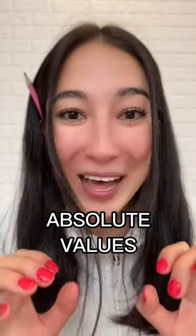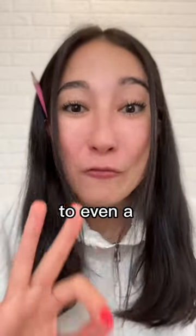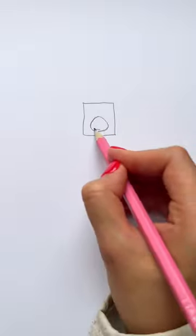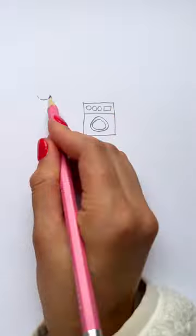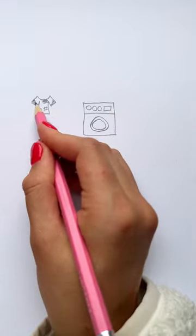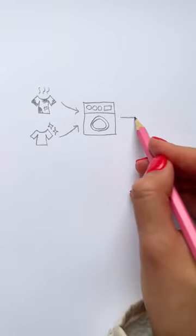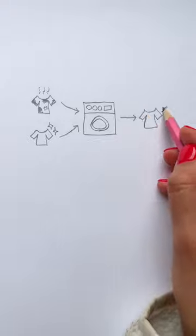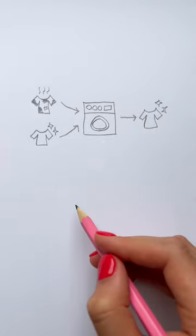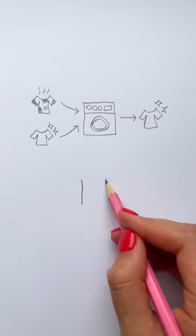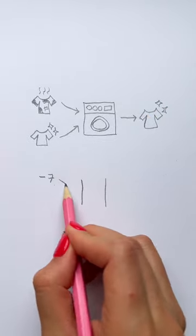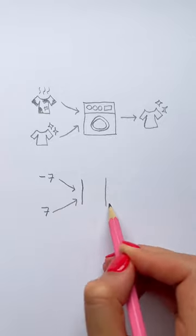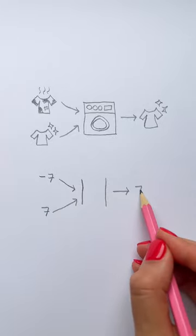How to explain absolute values to even a three-year-old: here is a washing machine. You can put dirty clothes in or even clean clothes in, but in an hour — ding! — it will always come out clean. The same goes with absolute values. You can put negative numbers in or even positive numbers in, but ding — it will always come out positive.